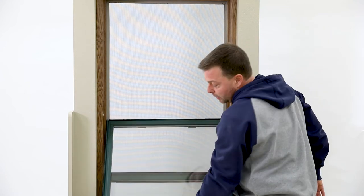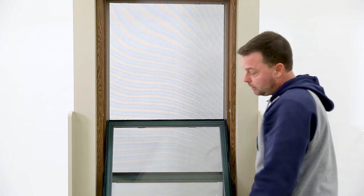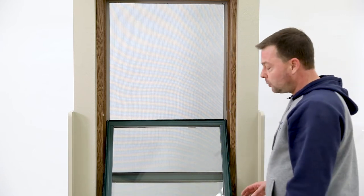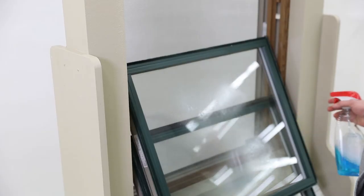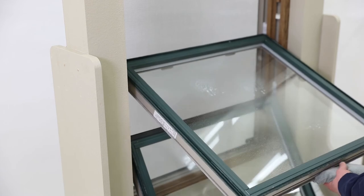At this point, you can rest your top sash directly on top of your bottom sash. You don't have to hold them, don't have to worry about propping them up. They'll just sit there naturally. You can clean your window and when you're done,